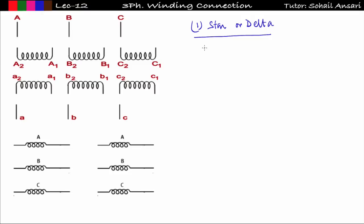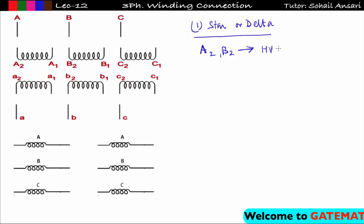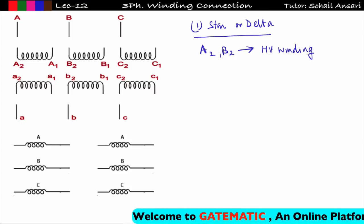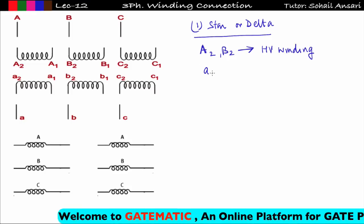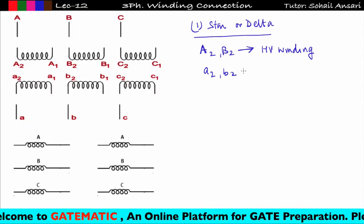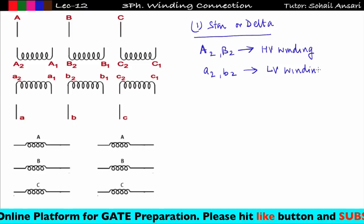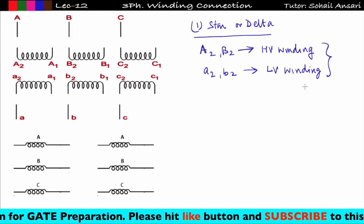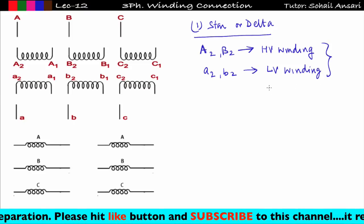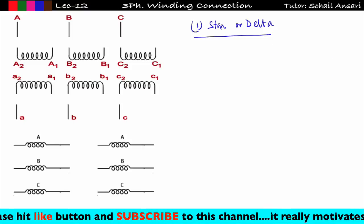Whatever is written in capital letters — for example A2, B2 — denotes the high-voltage (HV) winding. Whatever is written in small letters — a2, b2, or abc — denotes the low-voltage (LV) winding. This is the convention used by the British, and we are following that convention.